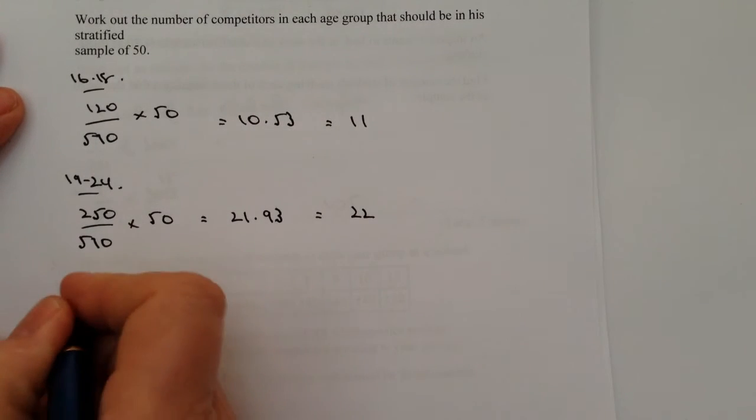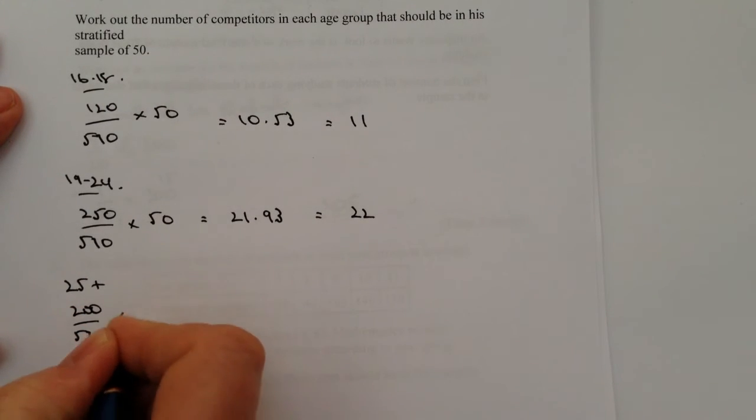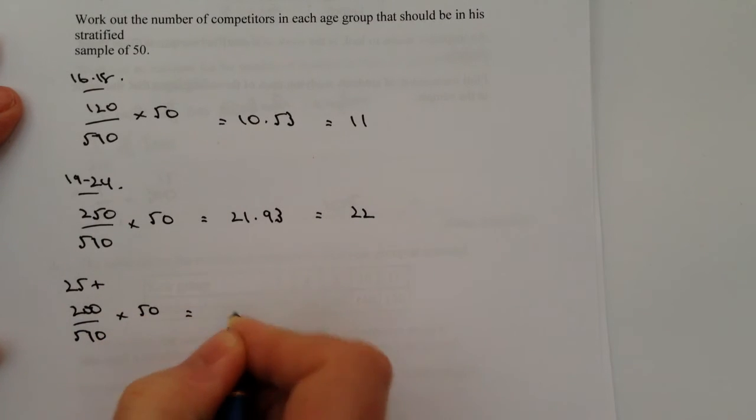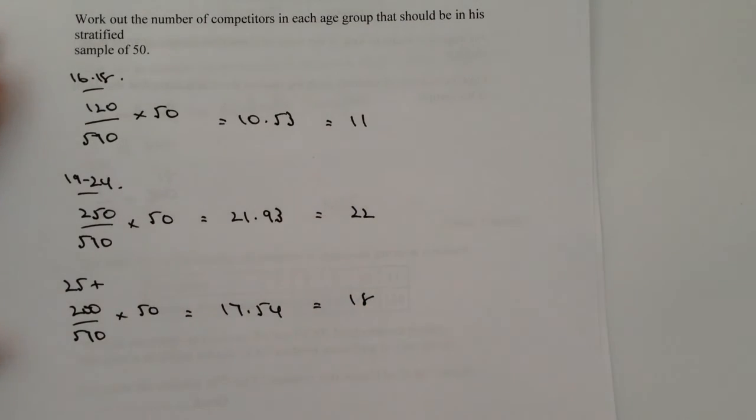The last one is going to be in the 25 plus age group, and that's going to be 200 out of 570 multiplied by 50, and that's going to give me 17.54, which is equivalent more or less to 18.